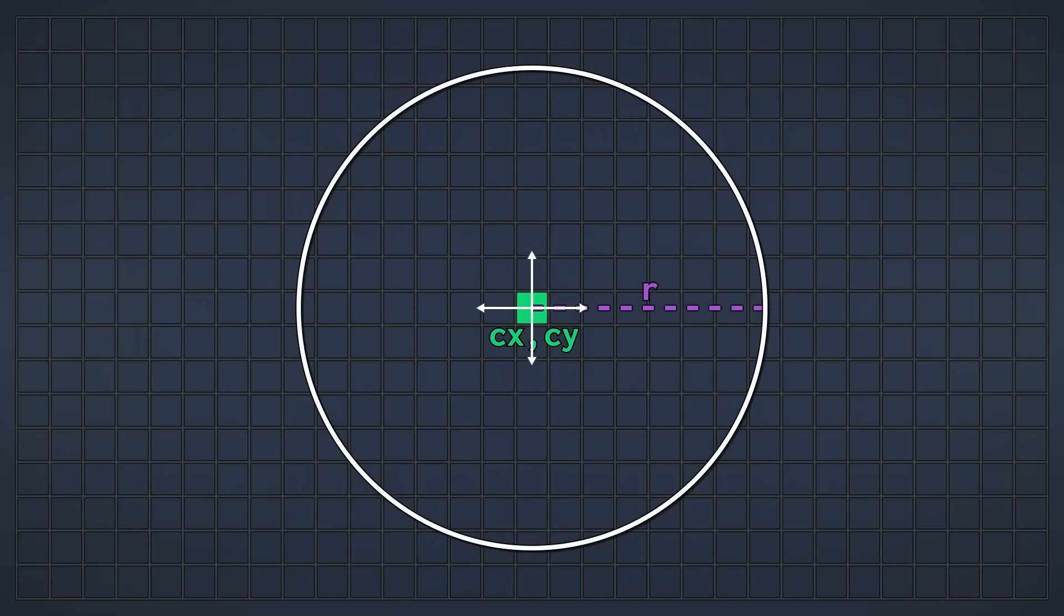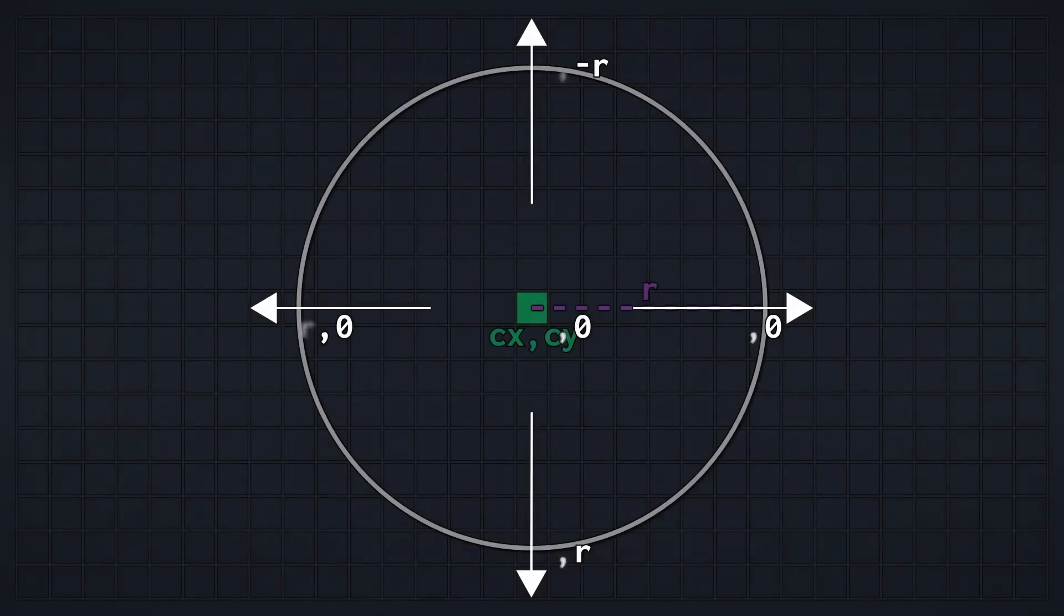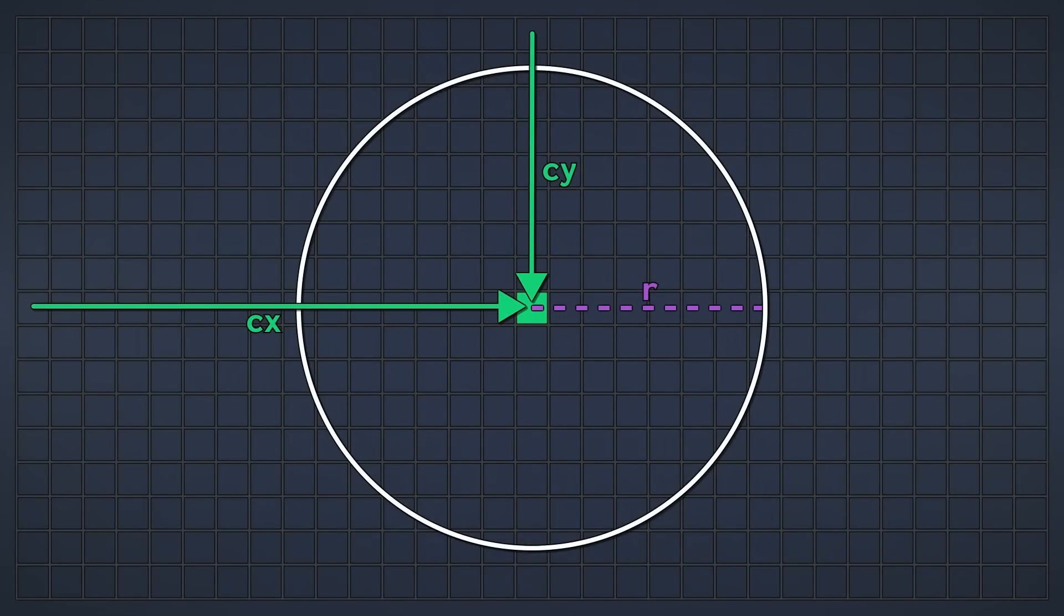The circle is of course defined by a position in the grid and a radius. Let's call them Cx Cy, which is the center of our circle, and R for the radius. To make our life easier, we're going to use a coordinate system relative to the center of the circle. That means we're going to treat the green pixel here as zero zero. When we place pixels, we can simply offset the coordinates by Cx and Cy to make them relative to our entire grid.